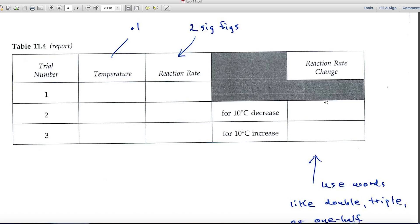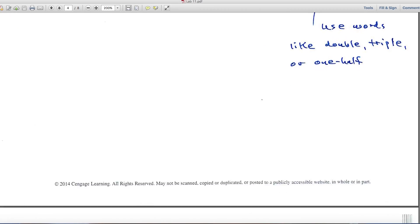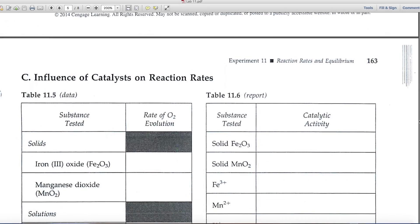In the report part for part B, follow those guidelines — temperatures to the tenth, reaction rates calculated to two significant figures. When it gets to the summary of that table, you'll use words like double, triple, one half, one third, and so forth. That's what the grader will look for.